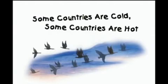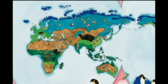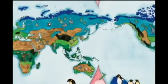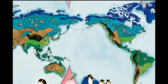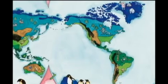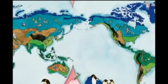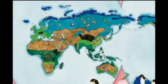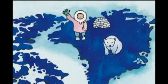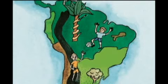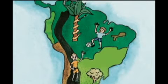Some countries are cold, some countries are hot. Spread the earth out flat and we can see the world at a glance. Different countries have different climates. The people in cold areas wear fur coats, and the people in hot areas wear short-sleeved shirts.